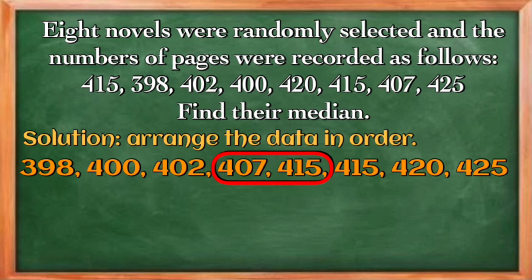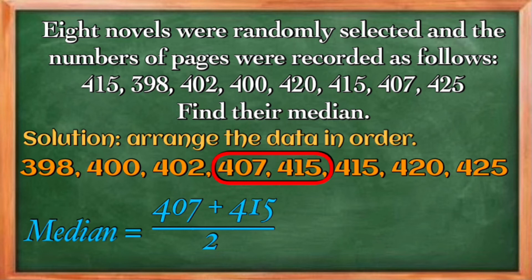Getting the average of these two numbers, we are going to add and divide by two. So 407 plus 415, we have 822, and then divided by 2, we have 411. Therefore, the median is 411.